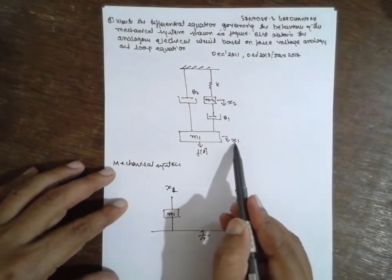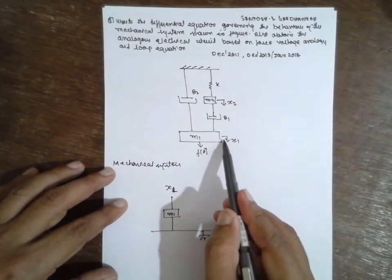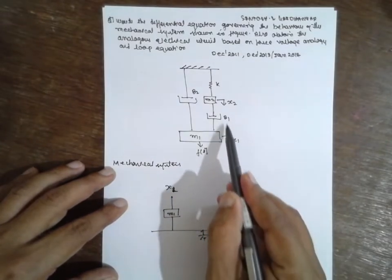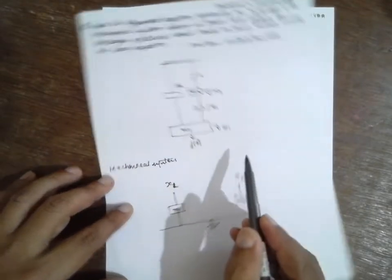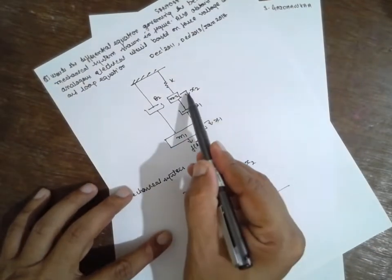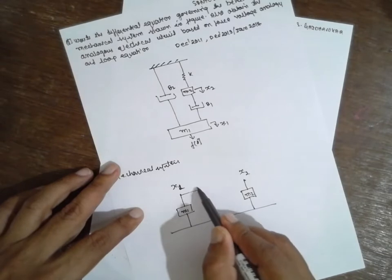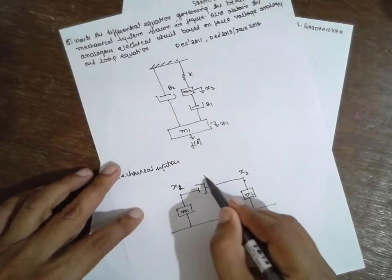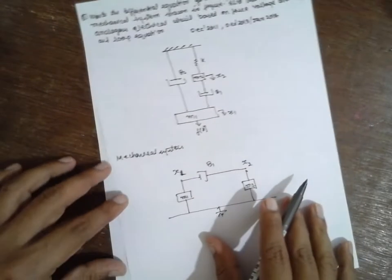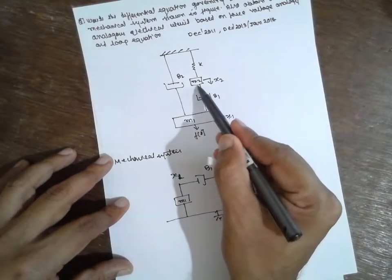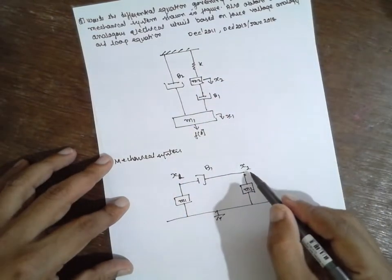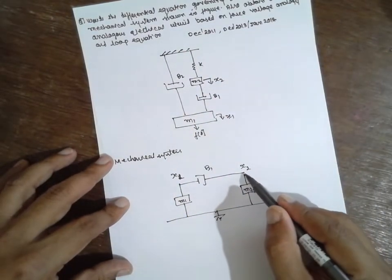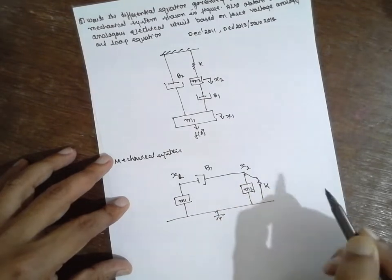Next, between X1 and X2, what is there? Between X1 and X2, there is a dashboard. Draw the dashboard, that is B1. Next, from node 2 to the ground, the spring K is there.